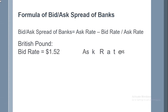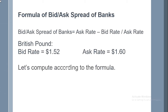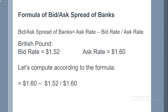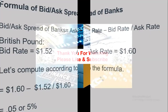For example, the British pound's bid rate is $1.52 and the ask rate is $1.60. Putting these into the formula: ask price $1.60 minus bid price $1.52, divided by ask price $1.60. So the answer is 0.05 or 5%.